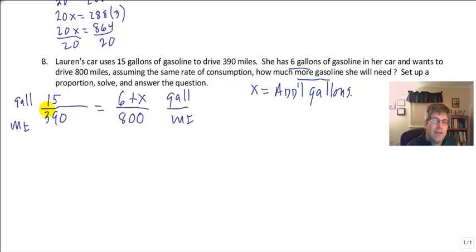Well, once again, 15 and 390, I can reduce that. Those are both multiples of 5. In fact, 15 goes into 390 evenly. That reduces to 1 over 26 equals 6 plus x over 800.